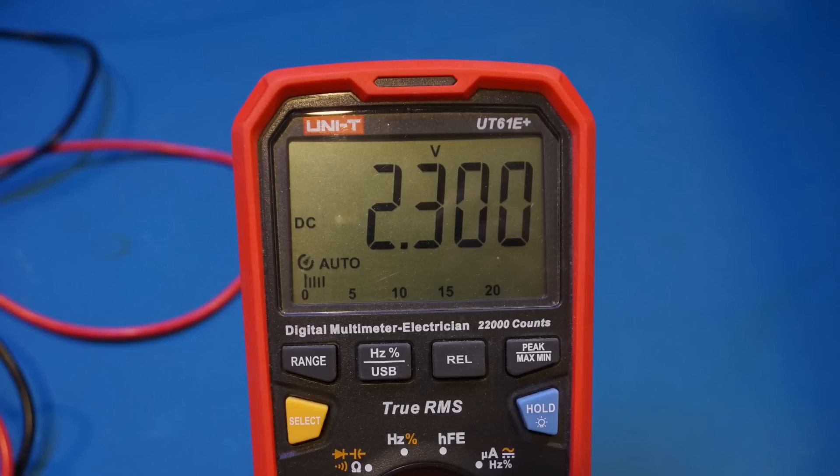On this UT61E plus, it doesn't display the leading zero, but you can clearly see now, instead of having four decimal places, we now only have three. The resolution, which is indicated by the last significant digit, dropped from 0.1 mV to 1 mV.